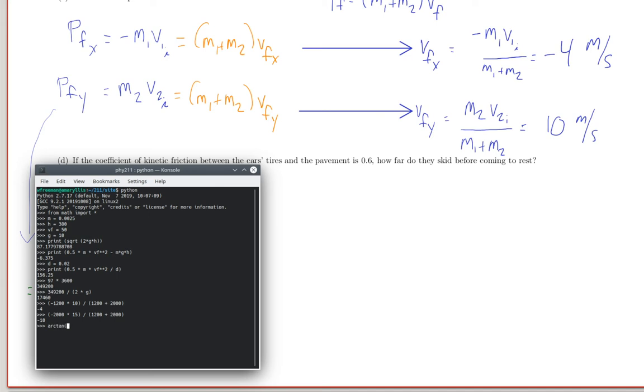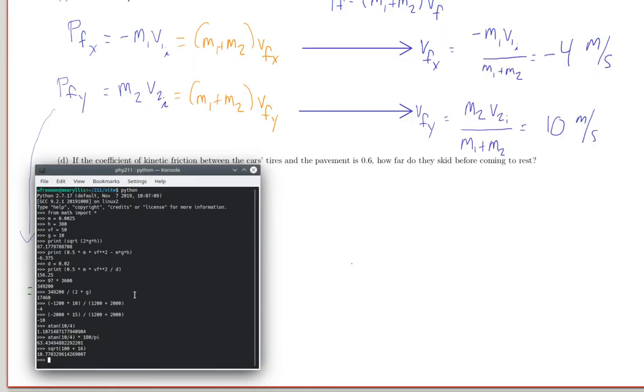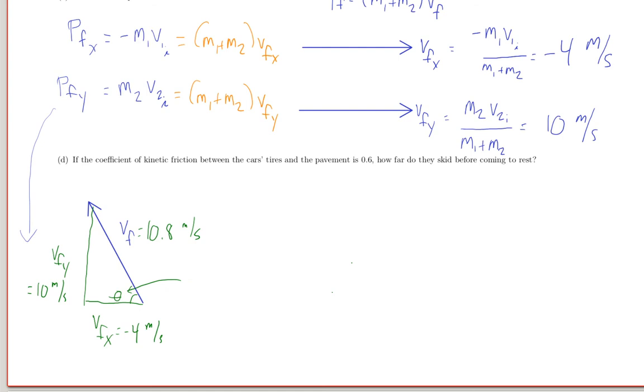So arctan, I think it's ATAN in Python, 4 over 10. That's in radians. So we need to convert this to degrees by multiplying by 180 over pi. That's 63 degrees. And we might as well do the Pythagorean theorem here too. 10 squared is 100, 4 squared is 16. Gives me 10.8 meters per second. So the magnitude of the final velocity is 10.8 meters per second, and the angle is 63 degrees north of west. So all of that belongs to part c.